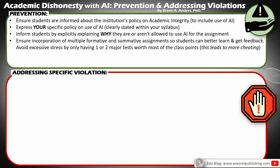The next one is to ensure that you incorporate multiple formative and summative assignments and assessments so that your students better learn and also get better feedback. It shouldn't be a situation where students don't know how they're doing and then suddenly face a major test. Things like that cause students to worry and have lots of anxiety, and they'll end up committing an academic dishonesty violation. We want to avoid excessive stress, which happens when we only have one or two major tests worth most of the class points, because the research shows that leads to more cheating.